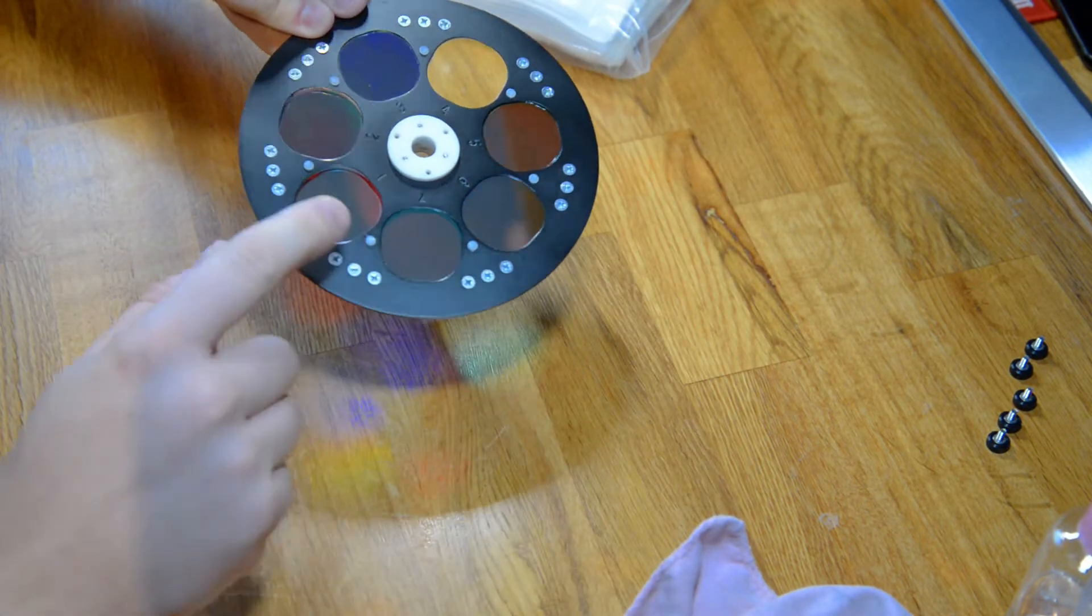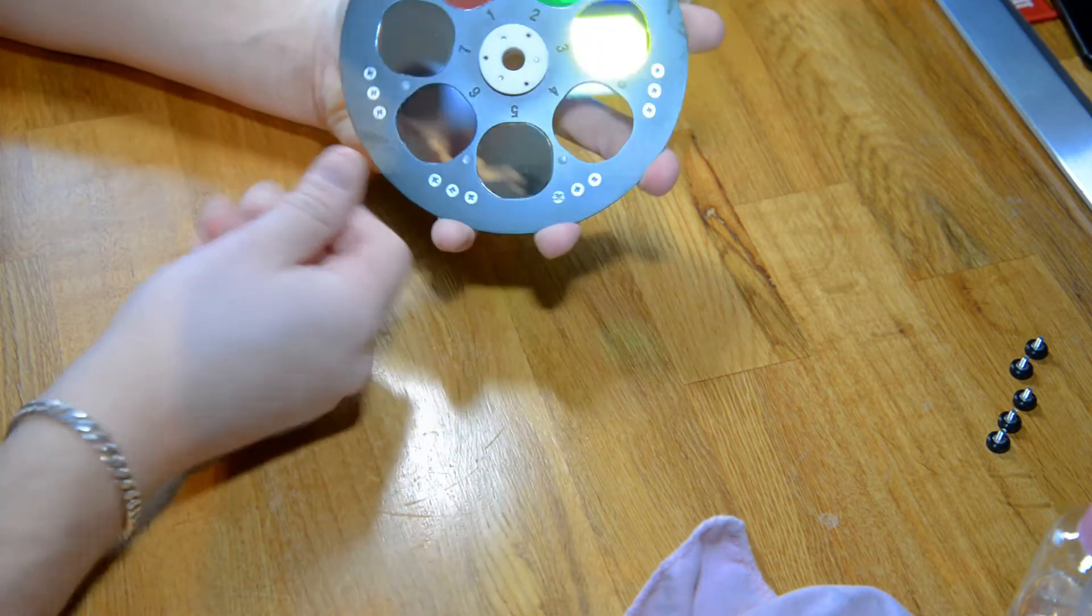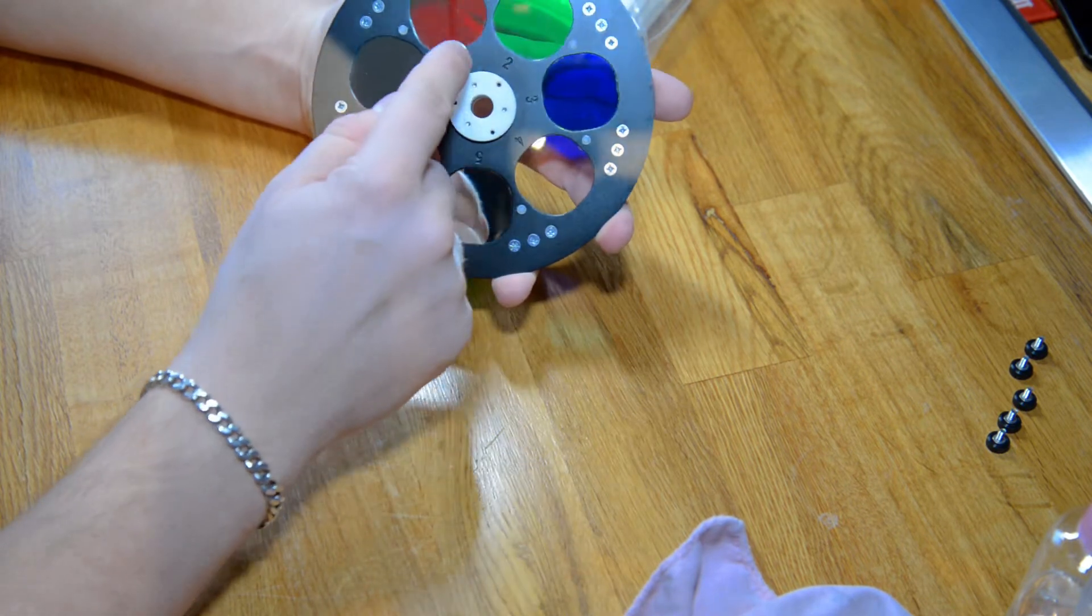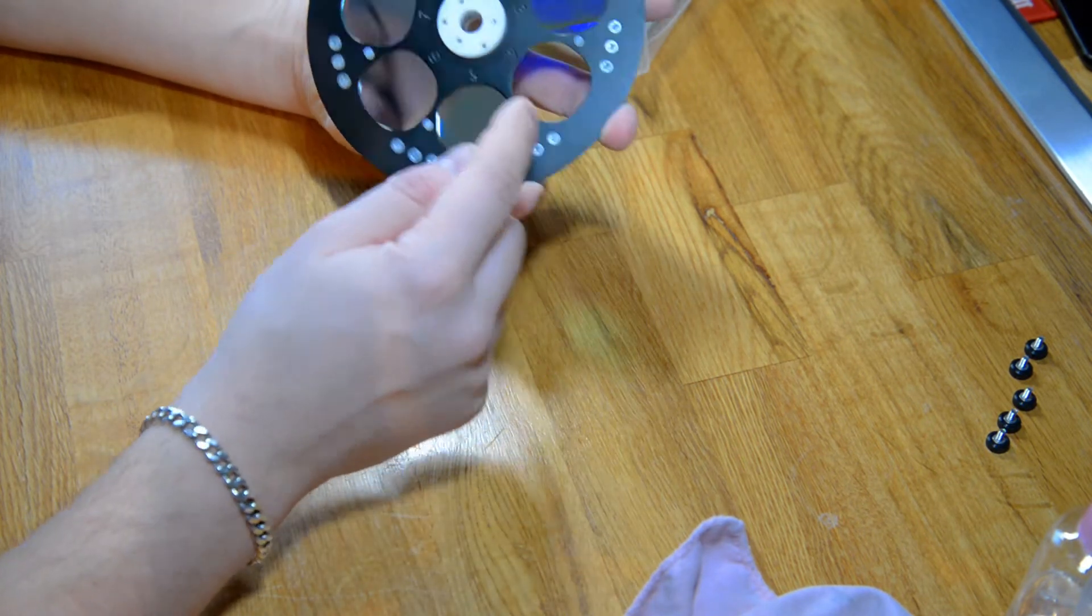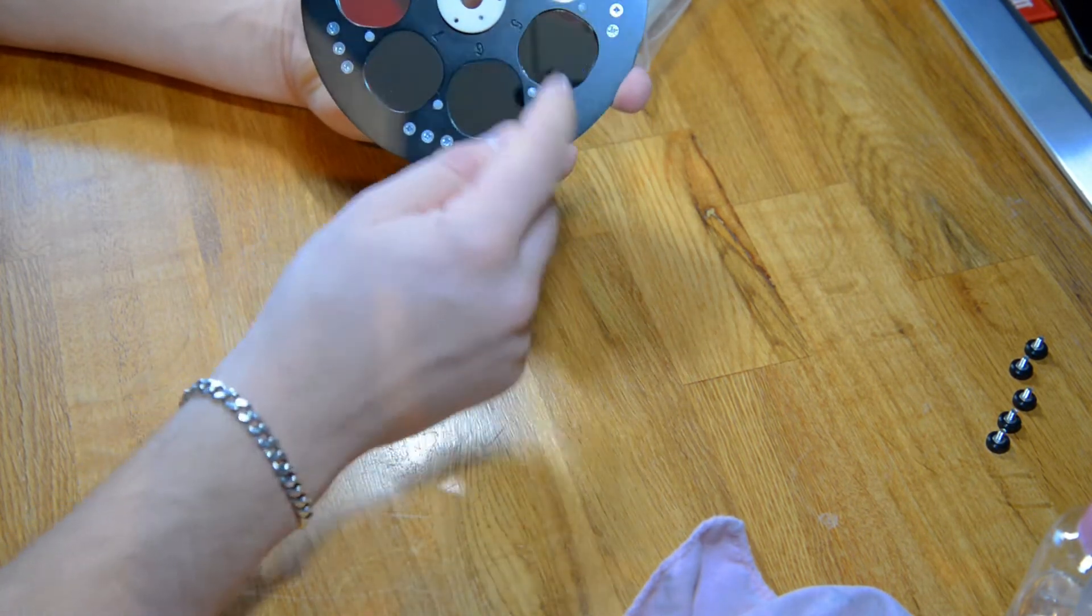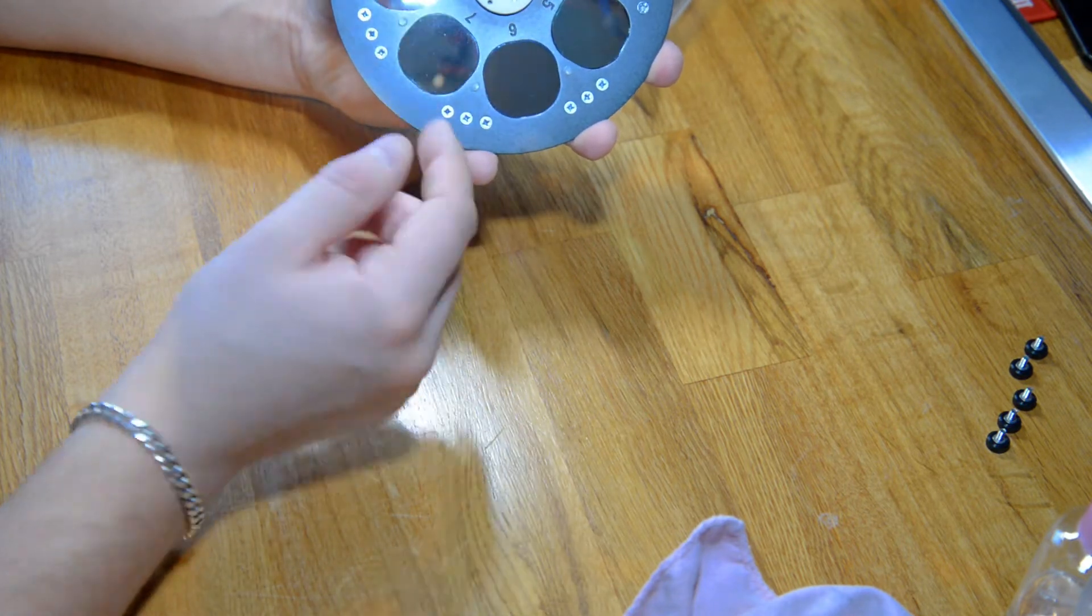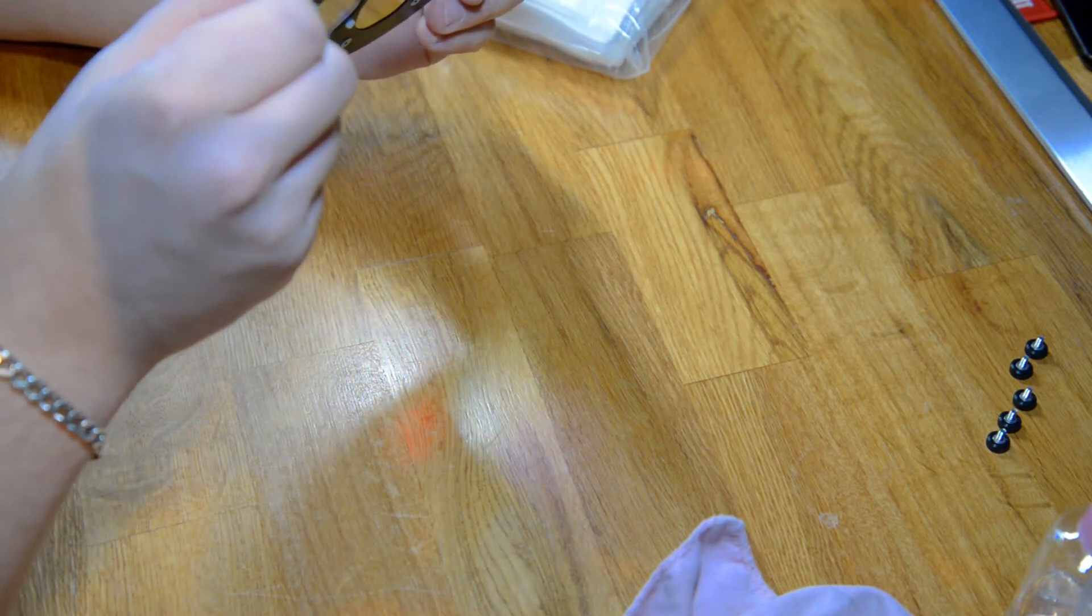If you see here, there are some numbers. One, two, three, four, five, six, seven. I believe it's the RGB, Luminance, H-Alpha, Oxygen and Sulfur filter, if I'm not mistaken.